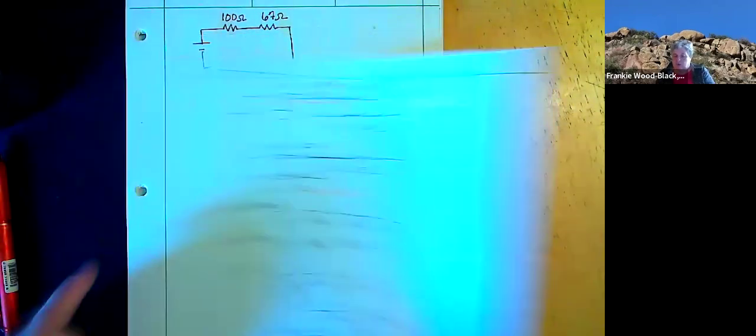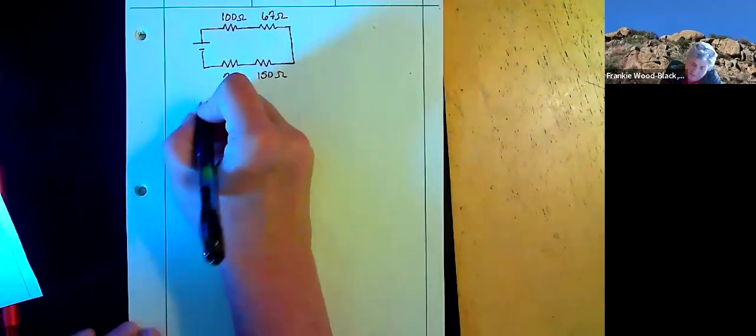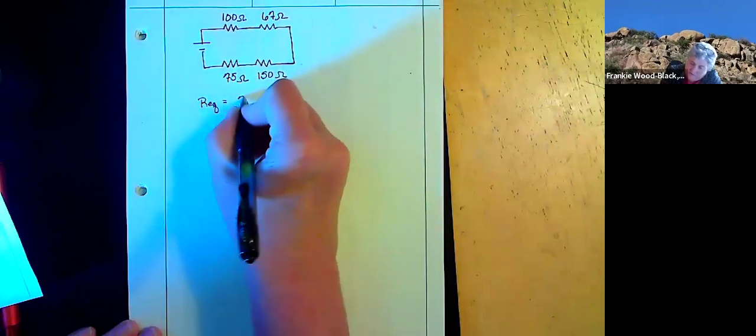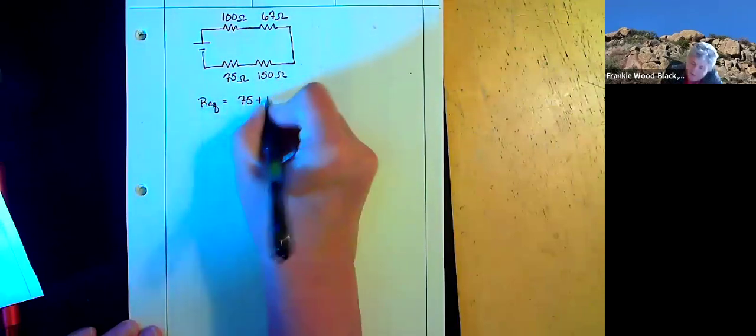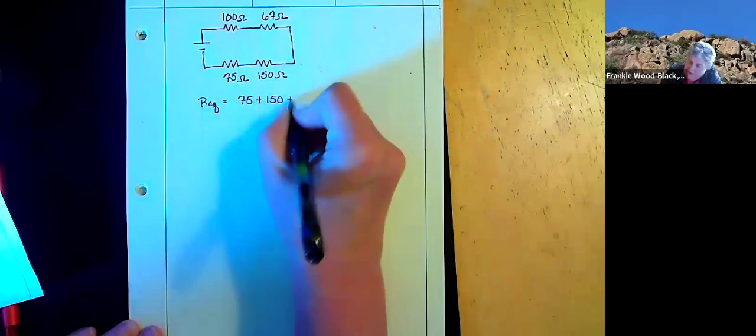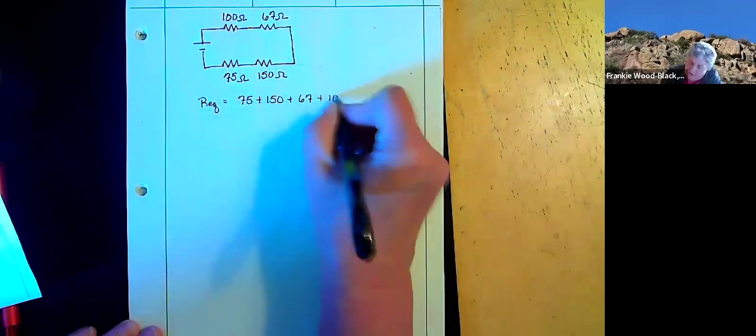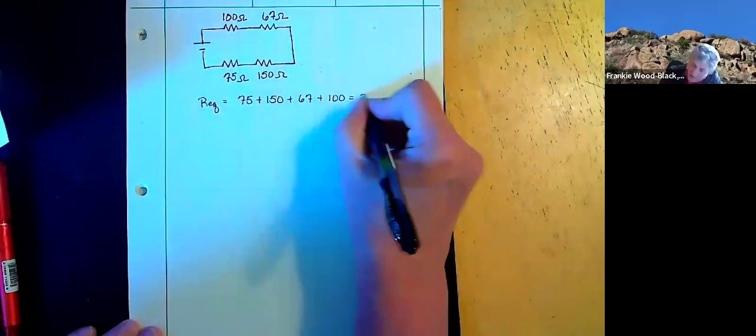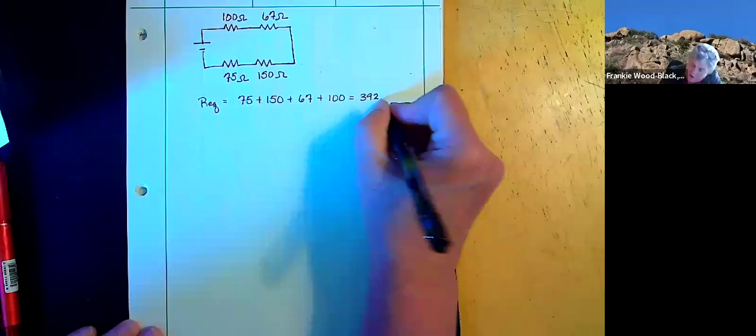And now we're going to use our series equation. So the REQ is going to equal 75 plus 150 plus 67 plus 100, and that's going to end up equaling 392 ohms.